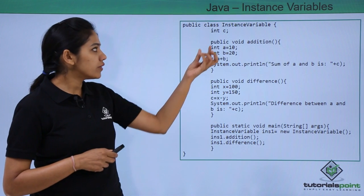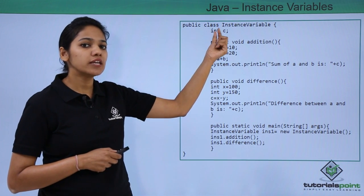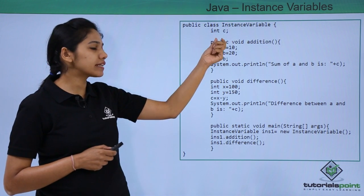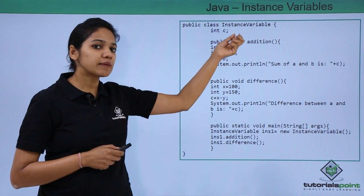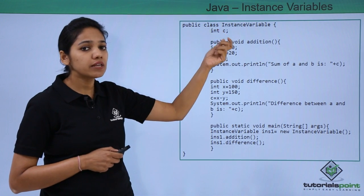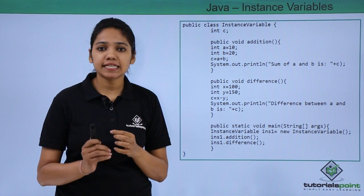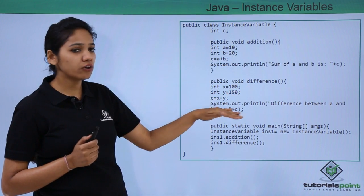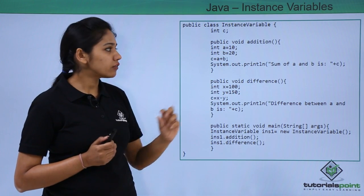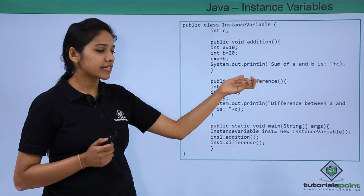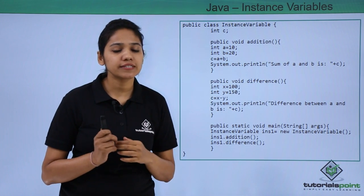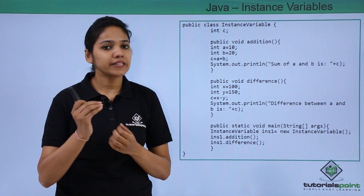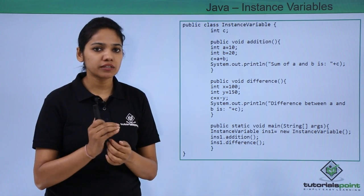In this example we have created a variable called c which is of integer type. This variable, declared as int c outside the methods, is an instance variable because it is declared inside the class and outside any of the methods. We have certain methods here: the first one is addition, the second is difference. We are trying to find the sum of values and store it in c, and find the difference of values and store it in c as well.